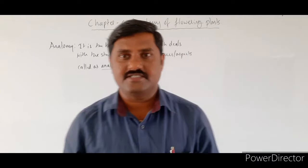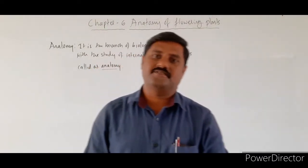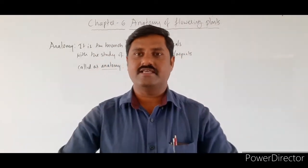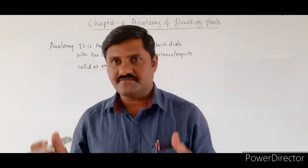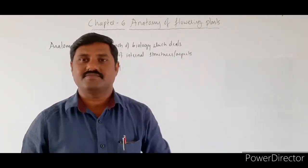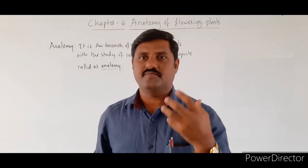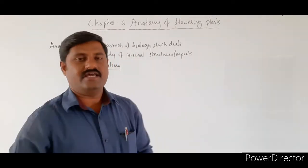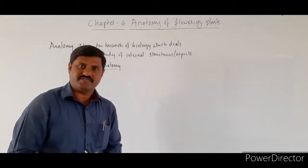But here in this chapter, we are focusing on plants. The plant body is organized basically with the help of the basic unit, that is cells. Cells together form tissues, tissues together form organs, organs together form organ systems. Here in this chapter we are concentrating mainly over the tissues.